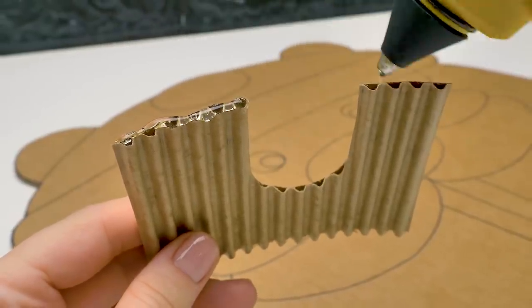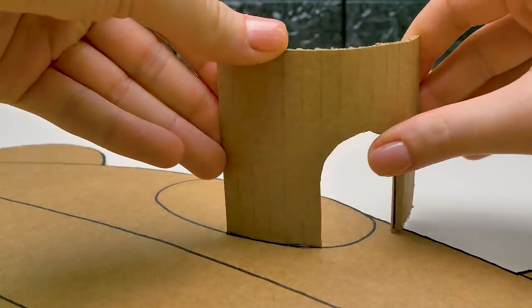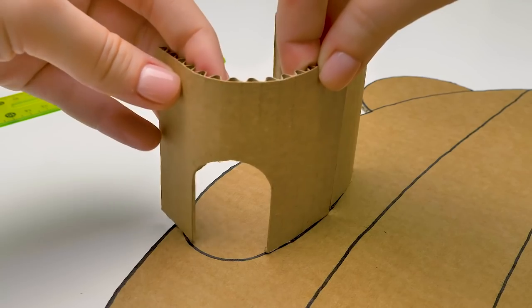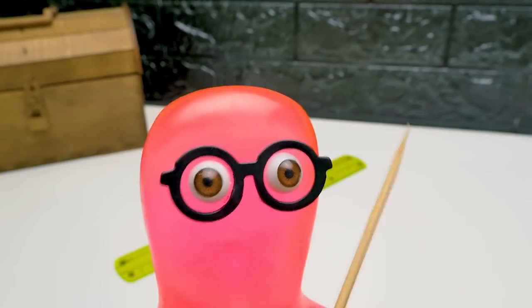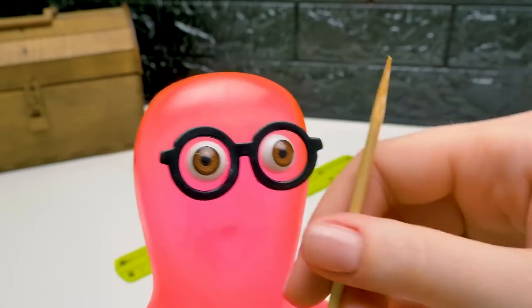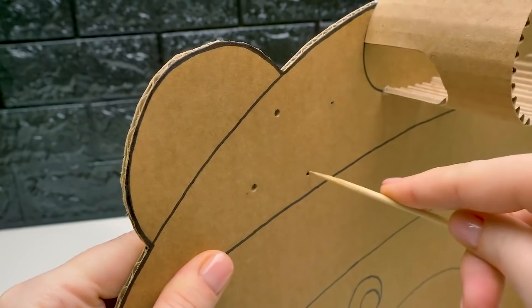Oh, with every second we're getting closer to the start of the race! I can't wait! By the way, while you were cutting out the base, I prepared the first pieces! Great, Sammy! Thanks! Now, we need to apply some glue to the bottom of each piece!